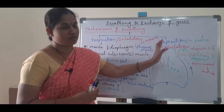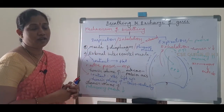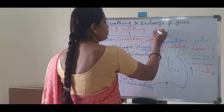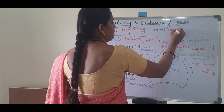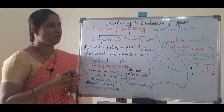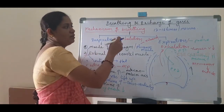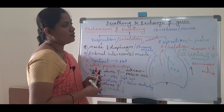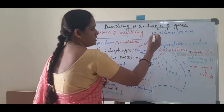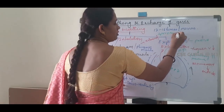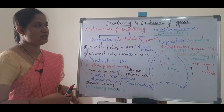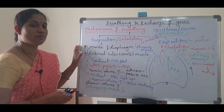This is about inspiration and expiration. Normally, a healthy human being performs 12 to 16 breathing movements per minute. These breathing movements can be estimated by a spirometer.